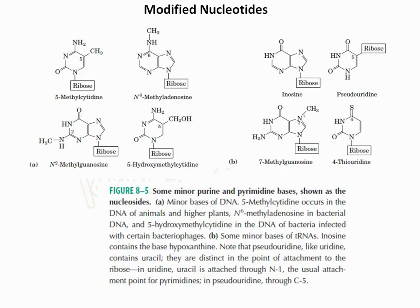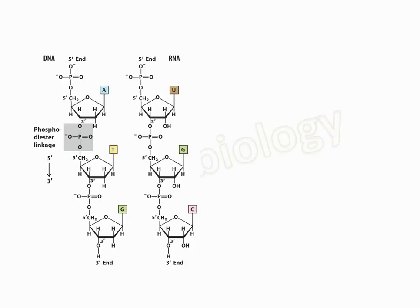Some purines and pyrimidines occur as minor bases in nucleosides. In DNA: 5-methylcytidine occurs in plants and animals, N6-methyladenosine occurs in bacterial DNA, and 5-hydroxymethylcytidine occurs in the DNA of bacteria infected with bacteriophages. Minor bases in tRNA include inosine and pseudouridine.